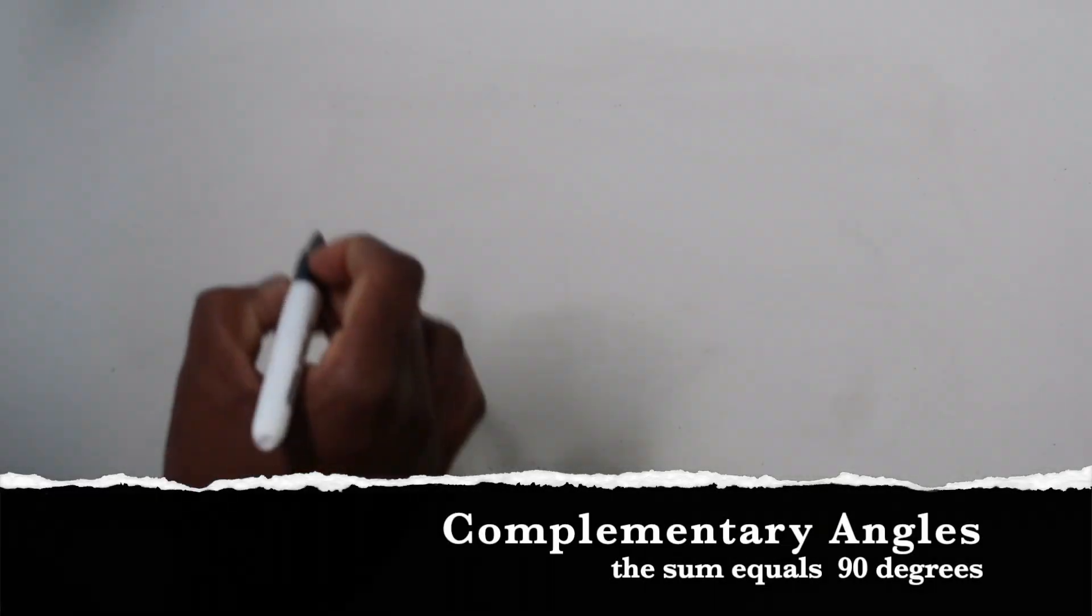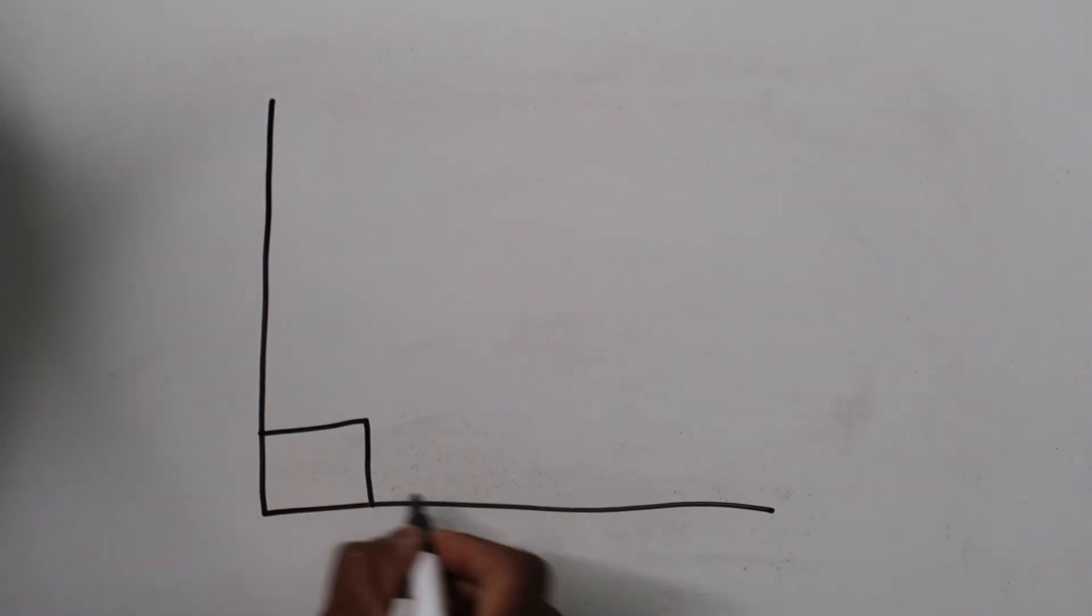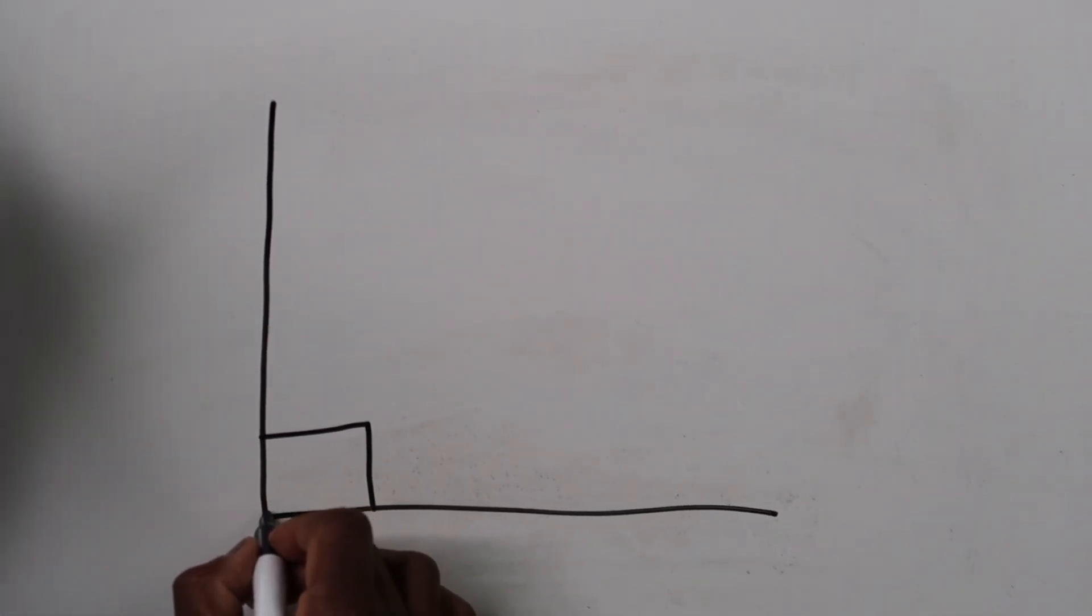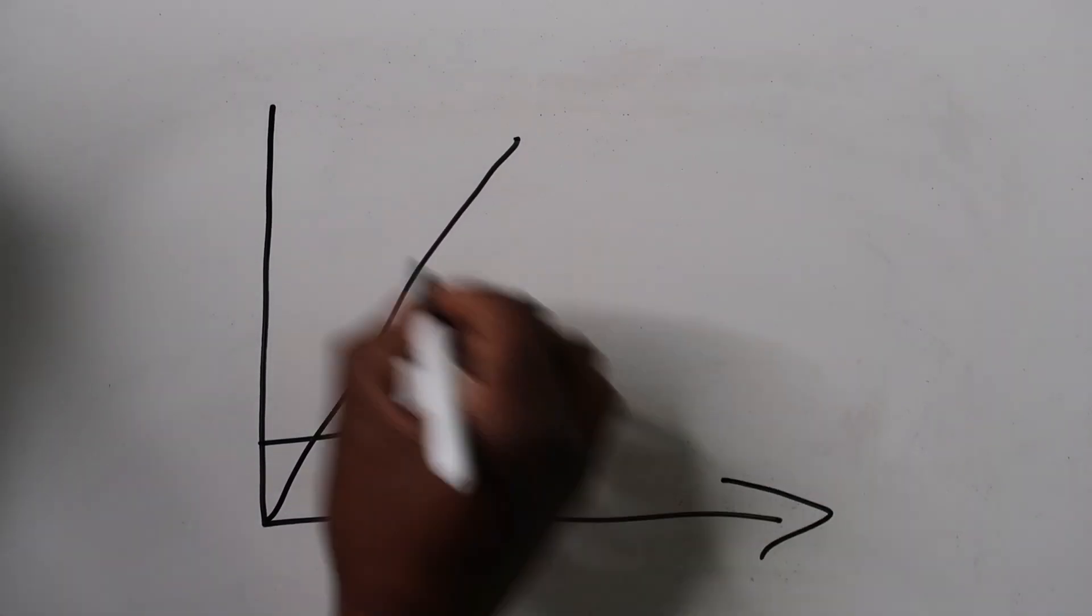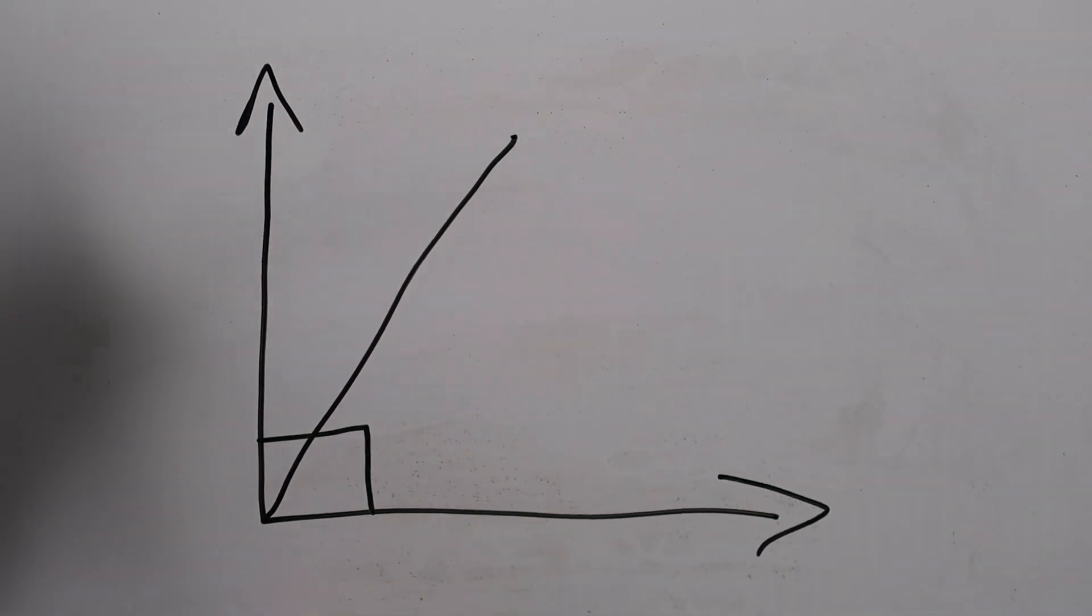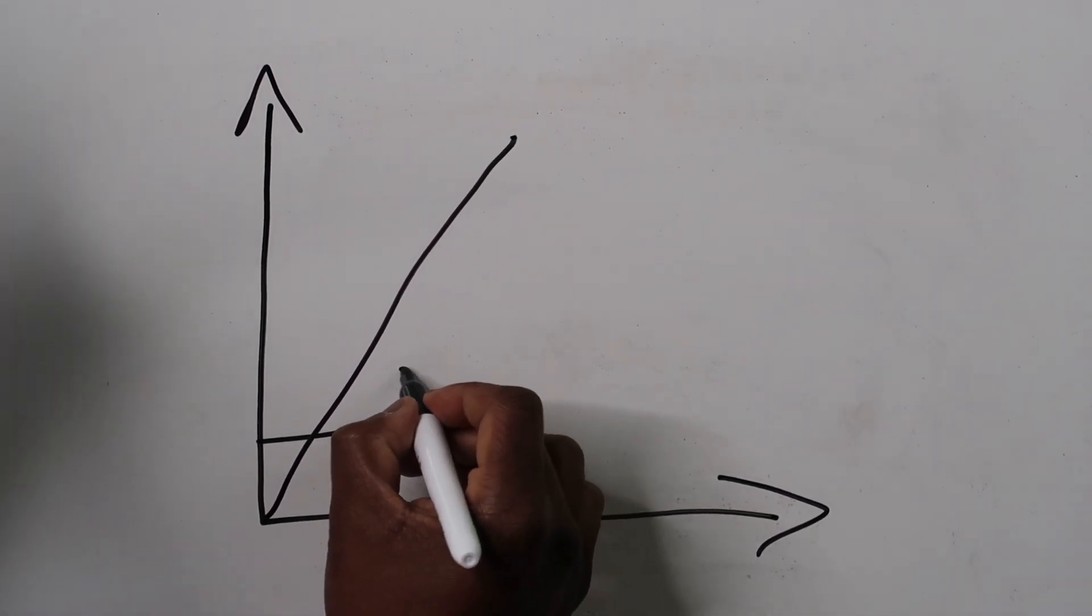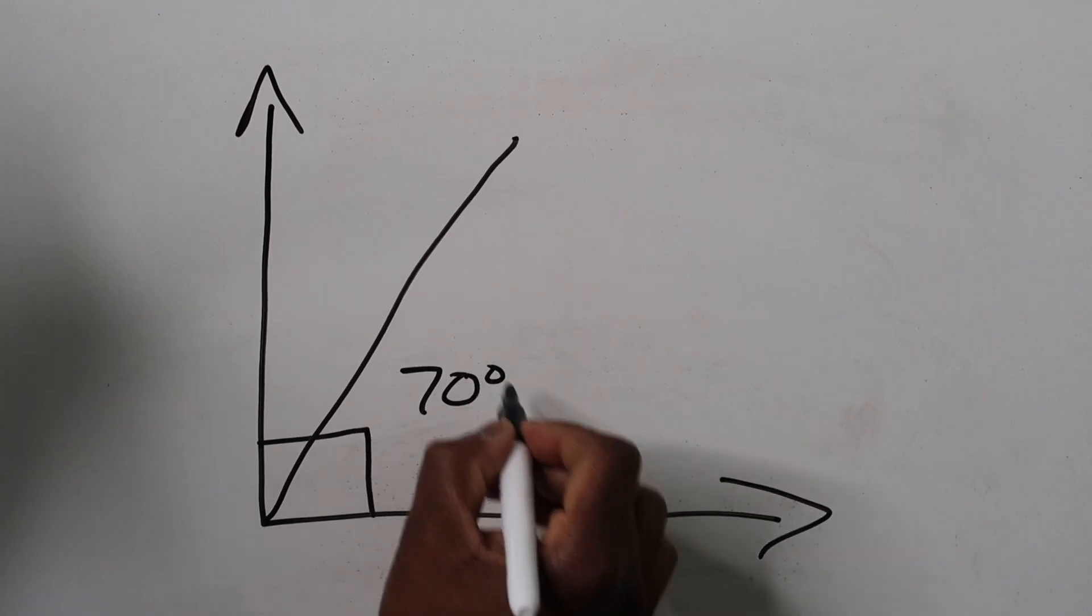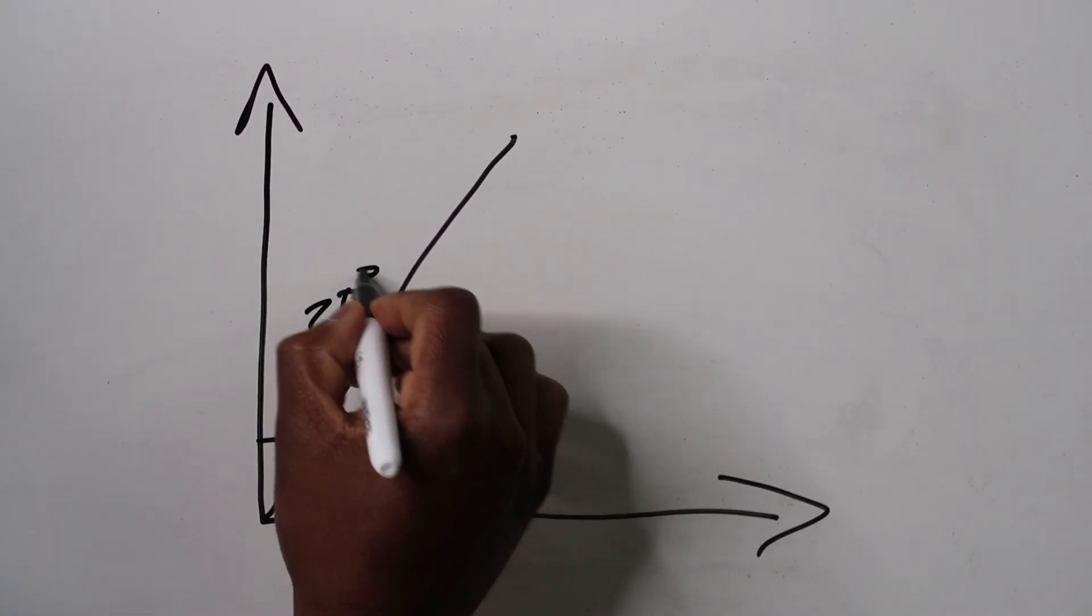Let's start off with complementary. Think about something that kind of goes nicely with something else or maybe a complementary gift. Let's talk about angles in that respect. Angles that are complementary are angles that form 90 degrees. So it could be one could be 60, one could be 30, one could be 45, the other one could be 45. Either way, they go together, they form 90 degrees. So that's a complementary angle.